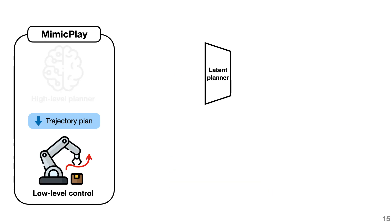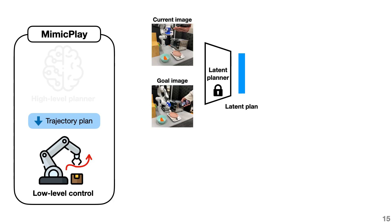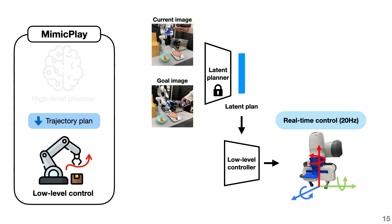After training the high-level planner with human play data, we freeze the weights. We then use a small amount of robot data as input to generate the latent plans, and further train a low-level controller to generate the final robot action conditioned on the plans. The reason we use latent features instead of decoded trajectories is because we empirically find that the trajectory will abstract away the fine-grained details of the optimization.